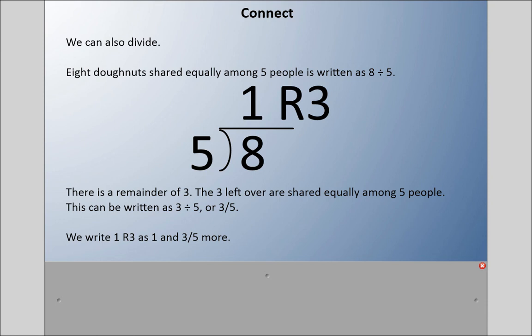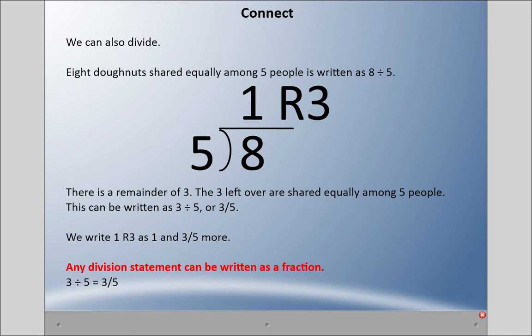So each person gets one and three-fifths total - one and three-fifths of a donut.